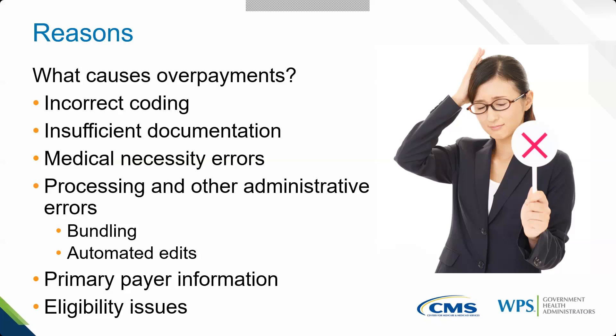The question of the two biggest issues we're currently seeing: number one is always primary payer information or Medicare Secondary Payer — when there's someone else responsible before us, that's our biggest overpayment issue, which is why we even have a section on our overpayment form to check a box for it. Number two is eligibility issues, but not necessarily Part A and B eligibility — it's all the other related factors. Primary payer is by far the biggest issue.